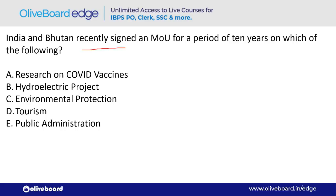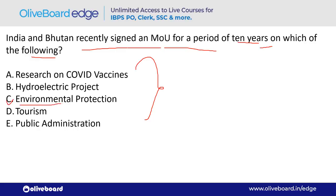India and Bhutan recently signed a Memorandum of Understanding for a period of 10 years. The MOU was signed for Environmental Protection — option C is the correct answer.